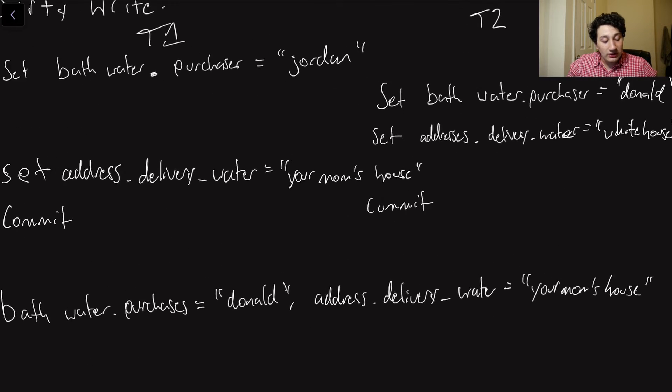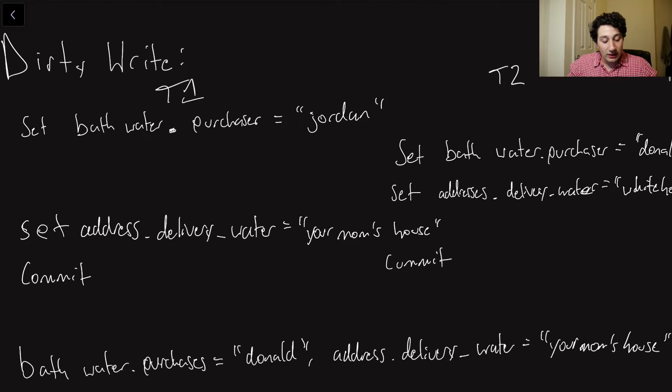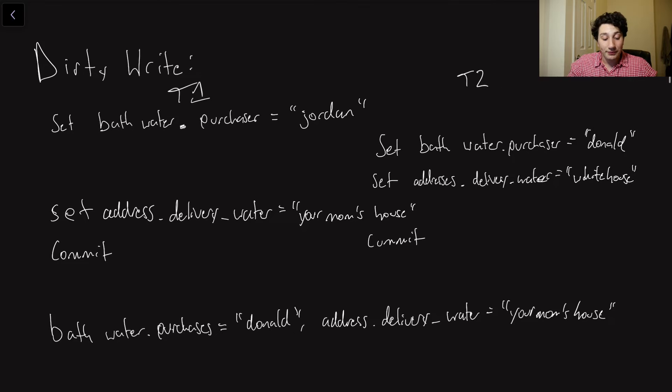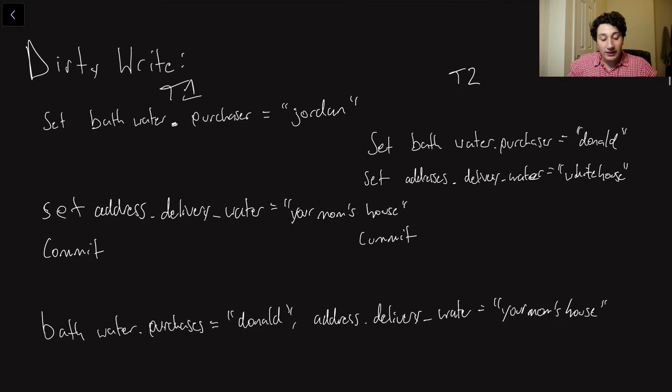Okay. So let's talk about some examples of race conditions. And so the first one is going to be called the dirty write. So the dirty write, while it sounds like a sex position, is not in fact. It's something that happens in databases.